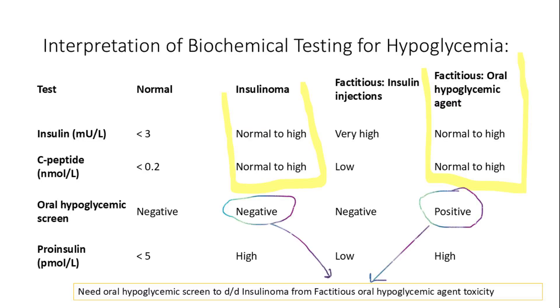In insulinoma and factitious oral hypoglycemia, insulin and C-peptide are normal to high. Differentiating between these two involves an oral hypoglycemic screen. In factitious insulin injection, C-peptide is low.